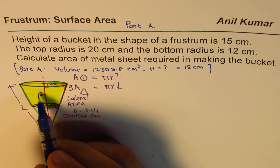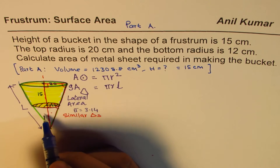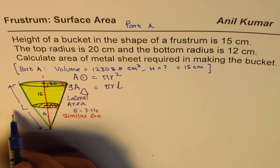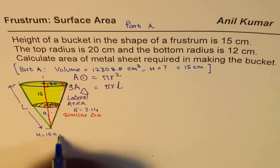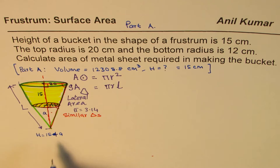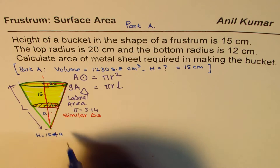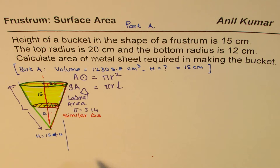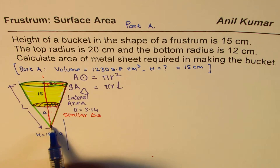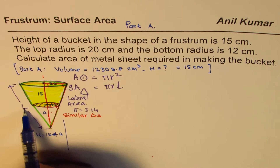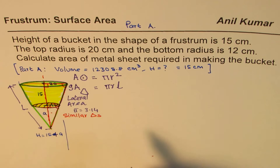We know the height is 15. We'll call the unknown small height A. So total height H will be 15 plus A. We'll use this to find A. Once we find A, we can find the slant lengths using the Pythagorean theorem.